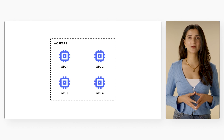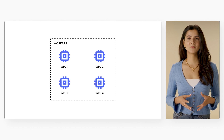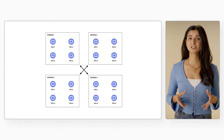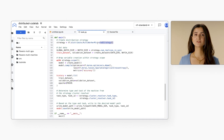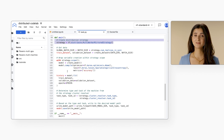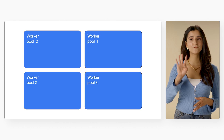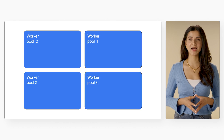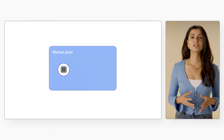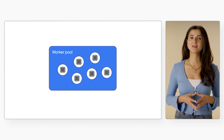Distributed training is when you train a machine learning model using multiple accelerators, like GPUs or TPUs, on a single machine, or when you train across multiple machines that each might have multiple accelerators. You'll need to make sure that the framework you're using supports distributed training — for example, both TensorFlow and PyTorch include distributed training modules. Once you've updated your training code, the main concept you'll need to understand from the Vertex AI side is worker pools. Vertex AI provides four worker pools to cover the different types of machine tasks for distributed training jobs. You can think of a worker as a single machine, and each worker pool as a collection of machines performing similar tasks.